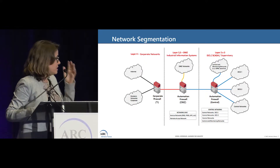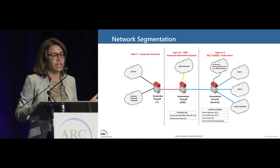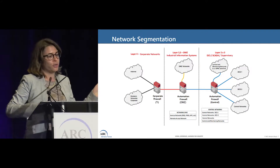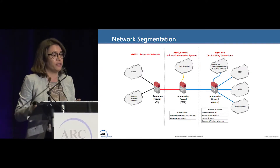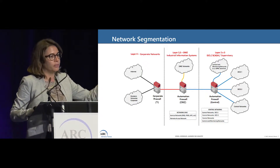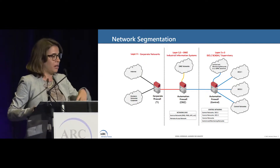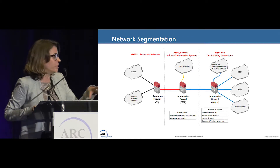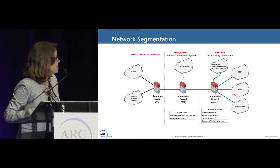The first item is network segmentation. We have a network model established and we try to standardize it across all plants. It's very difficult because Braskin is made up of very different companies they acquired, so each company has their own history and their own vendors. We try to make it standard.